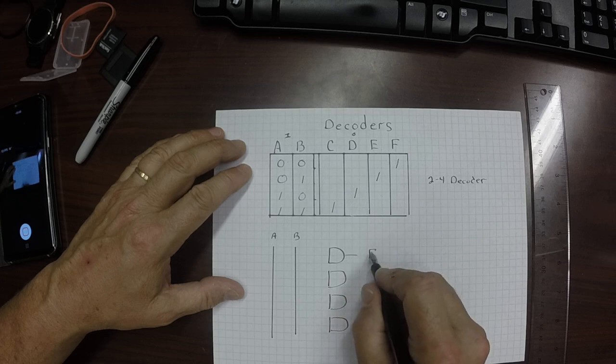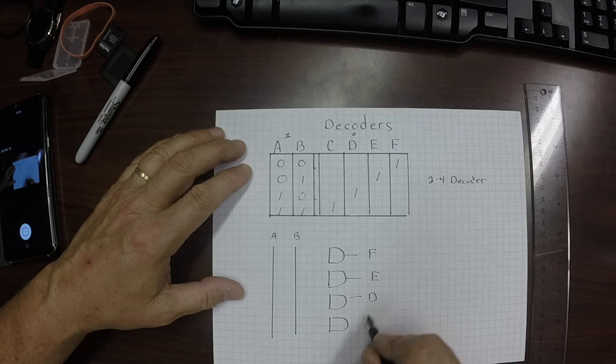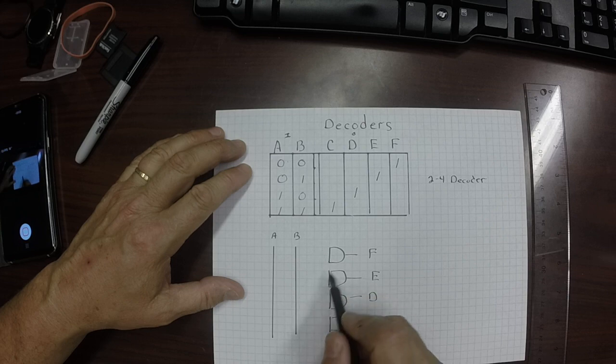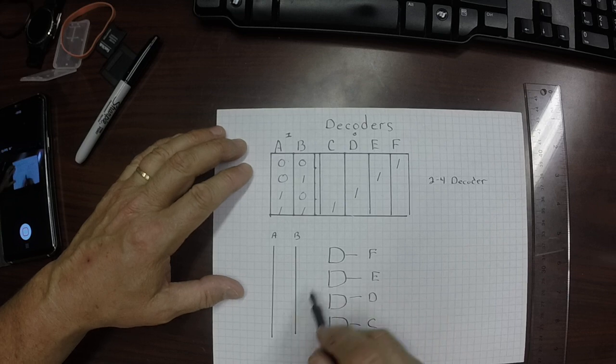So this one will be the F wire. This one will be the E wire. This one will be the D wire. And this will be the C wire. If we want to turn F on, this is an AND gate. Remember, an AND gate, you have to have both 1s to turn this one on to make it a 1.